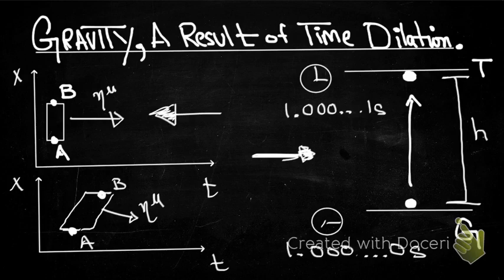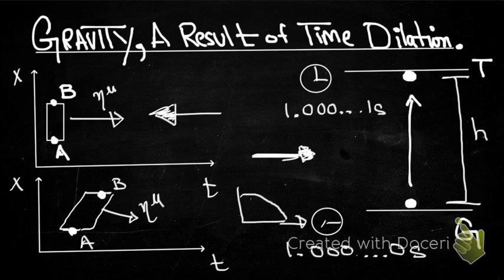That sparks an idea: because of this time dilation, the object is changing its velocity direction in such a way that it is moving closer and closer to the ground. If we make it a continuous curve rather than two discrete points, it's going to look like the object continuously goes downward — eventually falling to the ground. And so, what does that tell you? Simply that the time dilation between two points separated by some height from the ground causes the object to fall.